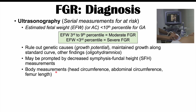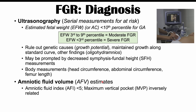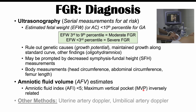Additional ultrasound measurements include head circumference, abdominal circumference, and femur length. Amniotic fluid volume estimates are also used: an amniotic fluid index (AFI) less than five, or a low maximum vertical pocket (MVP) — the largest measurable pocket of amniotic fluid — increases the likelihood of growth restriction. A larger maximum vertical pocket inversely indicates lower risk. Other diagnostic tools include uterine artery Doppler and umbilical artery Doppler methodologies.